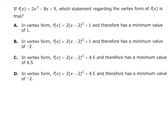Let's read this question together. If f of x equals 2x squared minus 8x plus 9, which statement regarding the vertex form of f of x is true? So which of these statements is true?